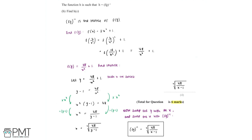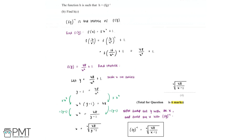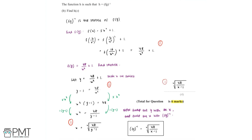This question is worth 6 marks. The first mark in part A is for finding f(1) equals 4. The second mark is for finding g(4) and therefore gf(1) equals 1 over 4. The third mark in part B is for finding fg(x) equals 48 over x to the power of 4 plus 1. The fourth mark is for setting up the equation y equals 48 over x to the power of 4 plus 1 to find the inverse. The fifth mark is for rearranging to find x to the power of 4 equals 48 over (y minus 1). The sixth and final mark is for finding the inverse function of fg equals the 4th root of 48 over (x minus 1), allowing us to get the full six marks.